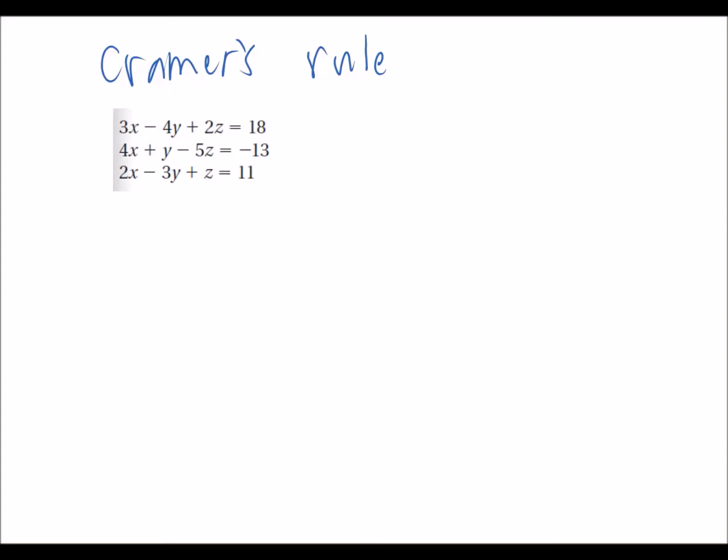So what Kramer's rule says is first, evaluate the determinant of the coefficients. So choose all the coefficients, 3, negative 4, 2, 4, 1, negative 5, 2, negative 3, 1. I'm just taking these coefficients.